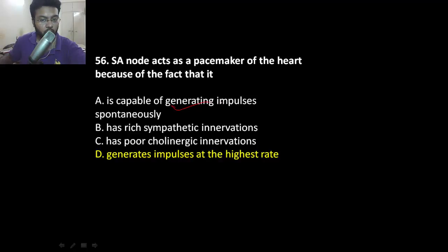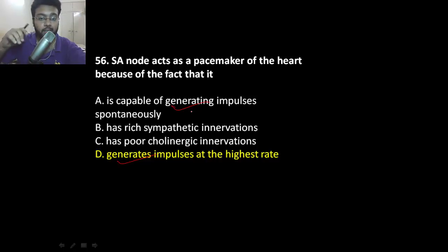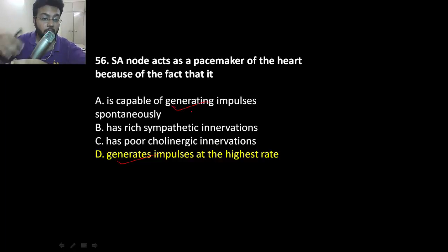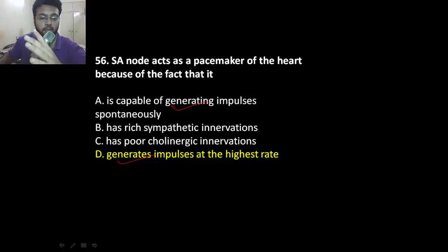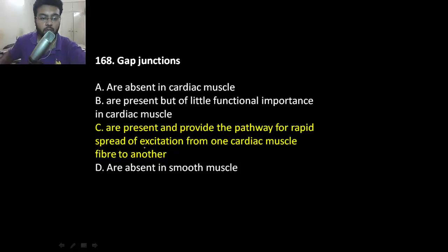The SA node acts as pacemaker due to spontaneous generation of impulse and generation of impulse at the highest rate. However, ventricular myocytes can sometimes become an ectopic focus, producing spontaneous action potentials, which may result in ventricular arrhythmias. So the SA node is not the only structure that can produce spontaneous signals — the best answer is that it generates impulses at the highest rate.